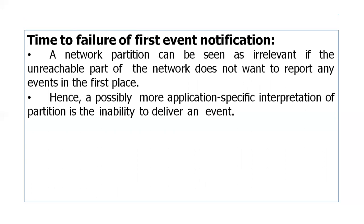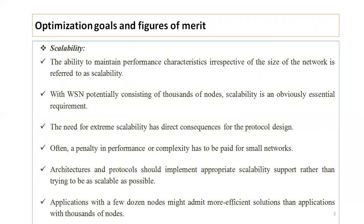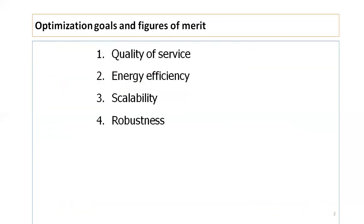To summarize, we have discussed the optimization goals and figures of merit in wireless sensor networks. The four parameters are: quality of service, energy efficiency, scalability, and robustness. Among these, energy efficiency plays a major role in optimization goals, as it connects the entire network without any loss. Thank you.